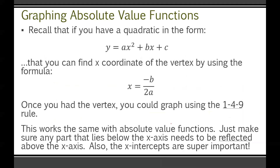Here's where things really get fun. Sometimes the absolute value functions we're graphing are not nice straightforward linear equations — sometimes they're actually quadratic functions. Recall that for a quadratic in the form y equals ax² plus bx plus c, the x-coordinate of the vertex is found using x equals negative b over 2a. Once you have the vertex, you graph using the 1-4-9 rule. The x-intercepts are super important because those are your pivot points.